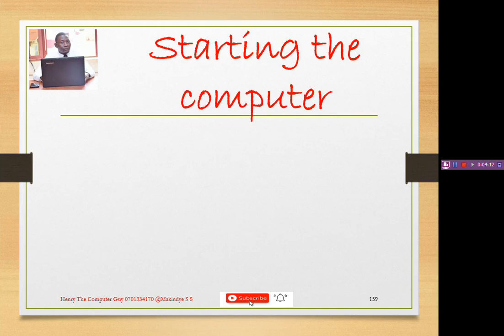Starting a computer: first make sure that all plugs are well connected — your monitor to the system unit, your keyboard to the system unit, your mouse to the system unit. Connect them to the UPS, or if you don't have a UPS, connect them directly to the power source.